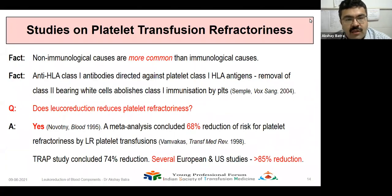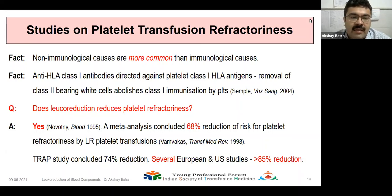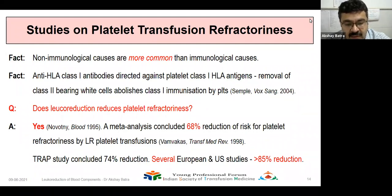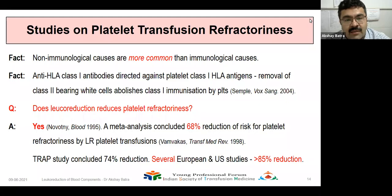Non-immunological causes of platelet refractoriness are more common than immunological causes. HLA class 1 antibodies are directed against platelet class 1 antigens, and removal of class 1-bearing white cells abolishes class 1 immunization by platelets. Does leukoreduction reduce platelet refractoriness? The answer is yes. A meta-analysis concluded a 68% reduction of risk of platelet refractoriness with leukoreduced platelet transfusions. The TRAP study concluded 74% reduction, and several European and US studies have shown more than 85% reduction of platelet refractoriness with the use of leukoreduction and leukofilters.